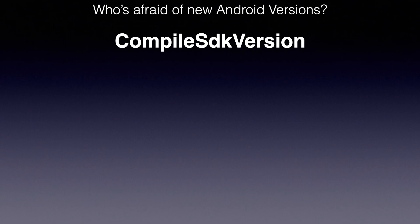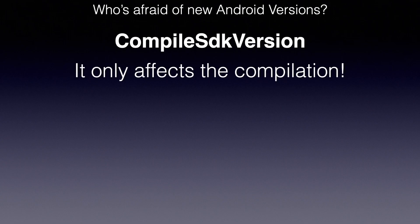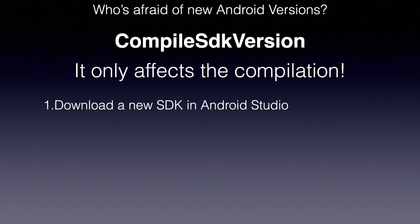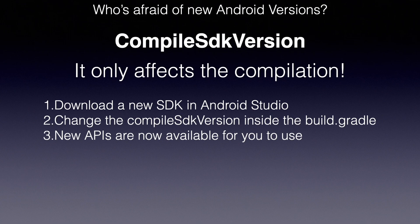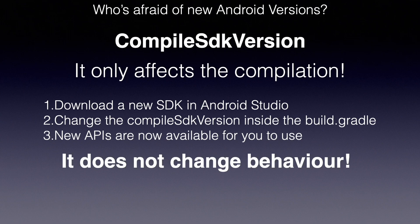First, let's look at the compile SDK version. This is a simple one. This tells Gradle: hey, you can use that version of the Android SDK to compile our app with. It only affects compilation, so you have to first download that SDK in your Android Studio and then change the compile SDK version in the build.gradle file. After you've done that, it means that any new API added in the SDK itself is now available for you during development. The good news is that this does not change the app behavior — it only matters during compilation and is simply not even included in the final app as information.